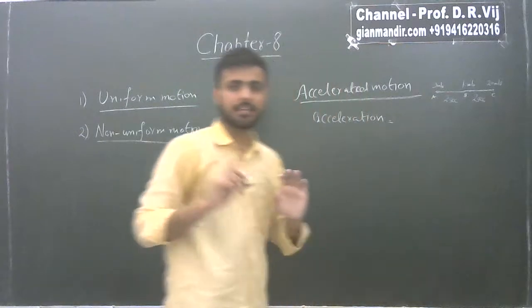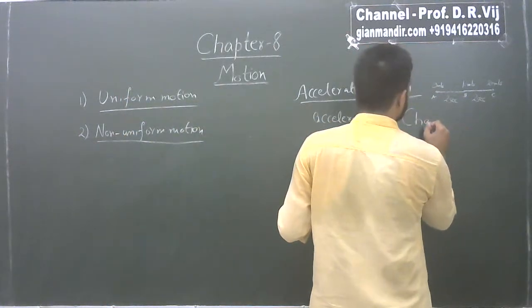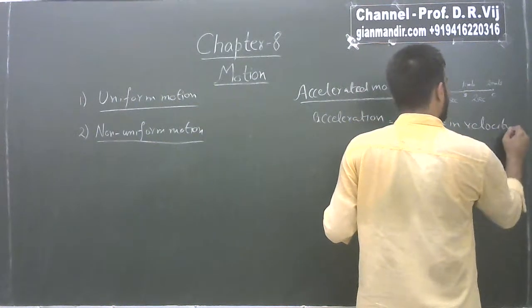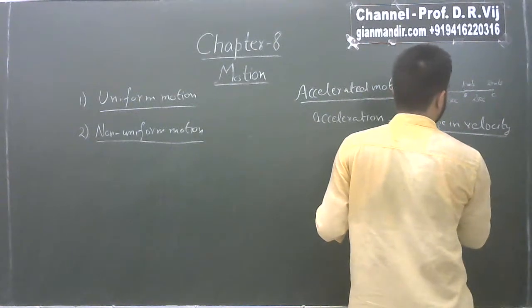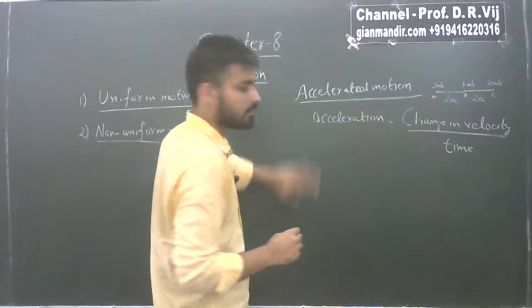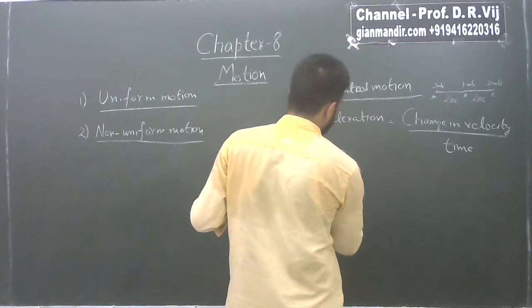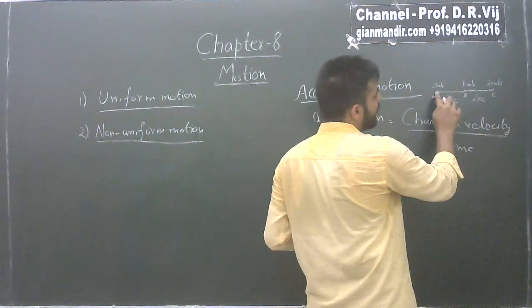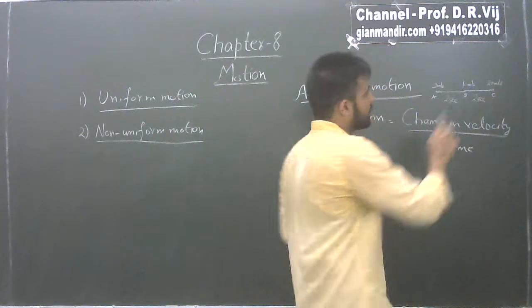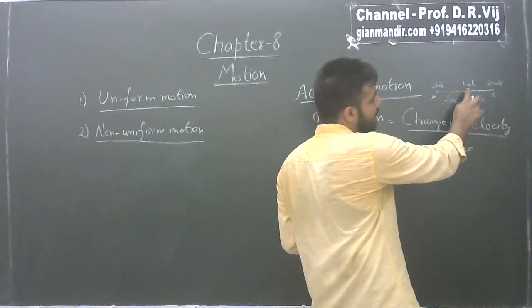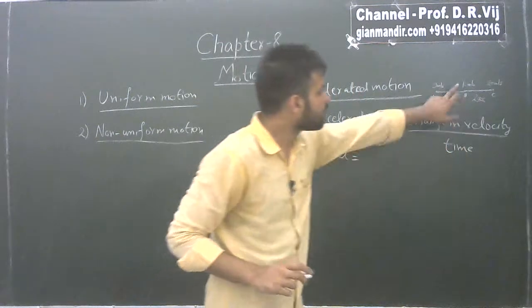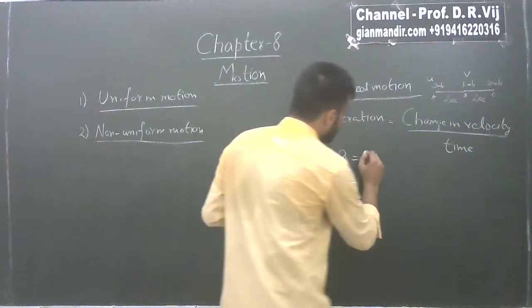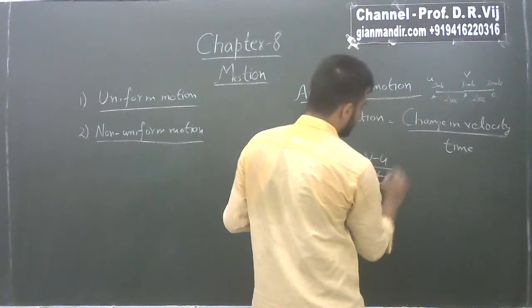So what is acceleration? Acceleration is nothing but change in velocity upon time. Acceleration is represented by 'a'. Change in velocity, if I want to find acceleration between A and B, is final velocity minus initial velocity. Final velocity is represented by v and initial velocity by u. So the formula is: a = (v − u) / t.